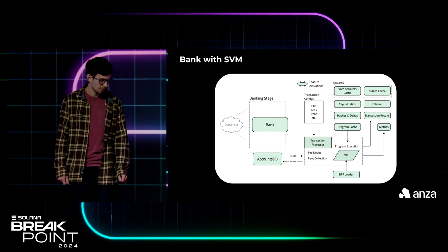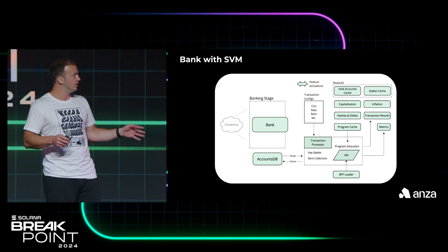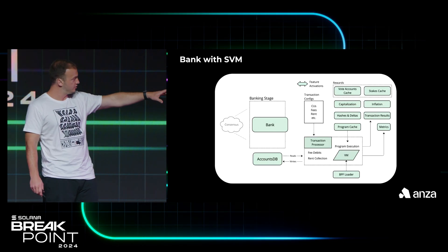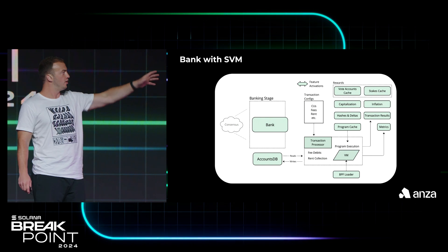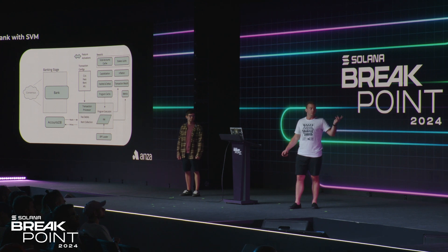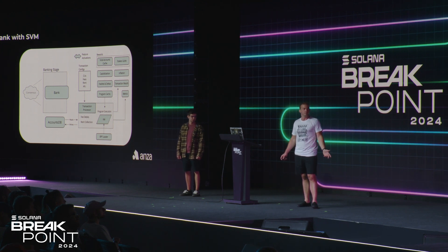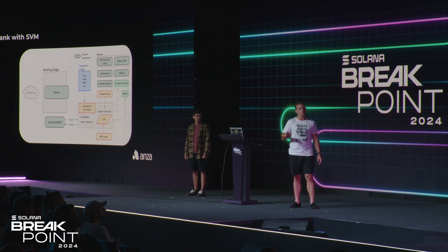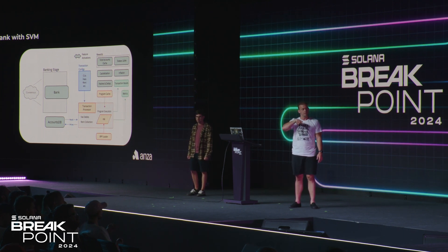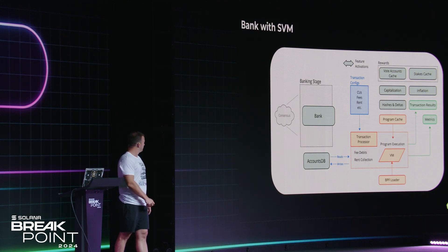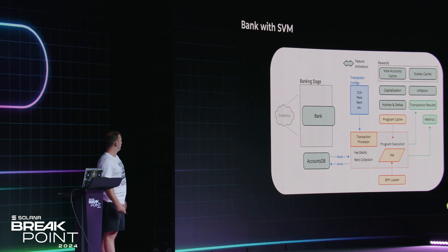This is a pretty simplistic design of all the things that bank does. The transaction pipeline that Lucas was describing is sort of here on the bottom, but then there are all these other things that if you've ever had to fork this or use it, you'd have to get rid of. The new API we're talking about today actually lets you do just the core pipeline. You give it some inputs — a list of transactions — and you get that entire pipeline with the cache and the VM for free. Then you get some results and even some metrics. This is how we've carved the SVM out of the rest of the runtime.